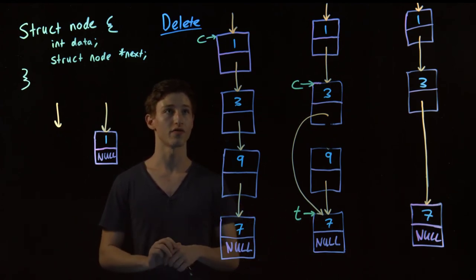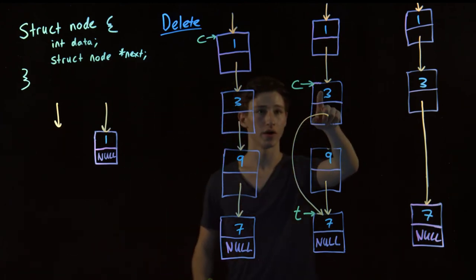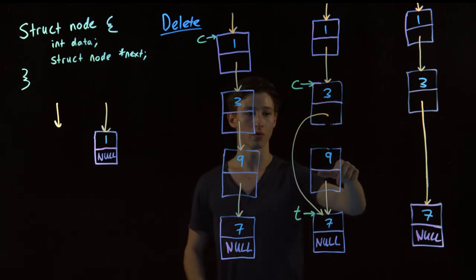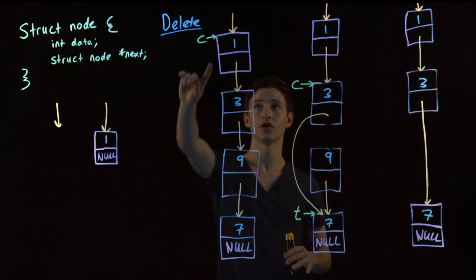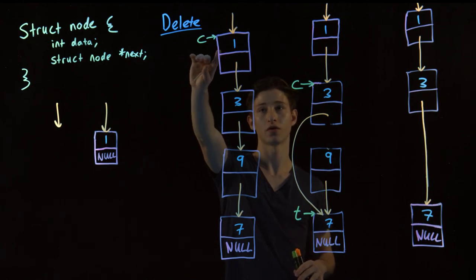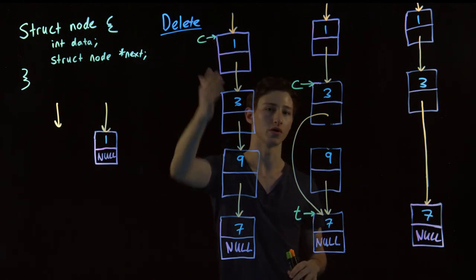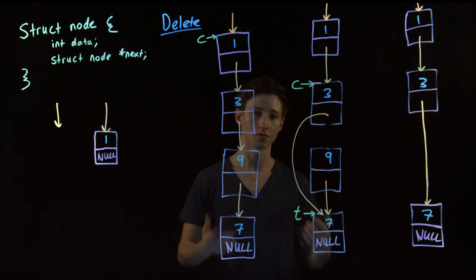The next thing is if we want to delete the first node. Now that's a bit tricky, because current had to point to the node before the node we wish to delete, but when we use a current pointer, it always points to the first node, which there is no node before the node we wish to delete. So we need a special case.